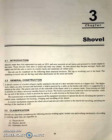Shovels were made in the first days earlier in the year of 1850. Shovels were mounted on rail trains and powered by steam engines at that time. Shovels were slow in action and were very clumsy. As time passed, they became stronger, faster, and lighter, and left the rail to move on crawler tracks and sometimes on rubber tires.